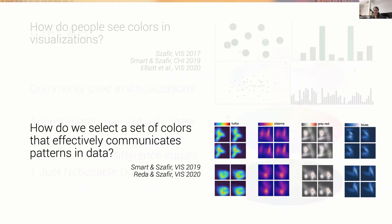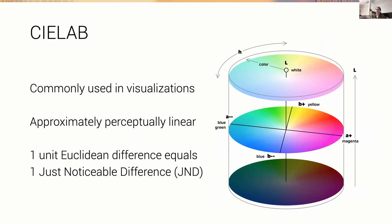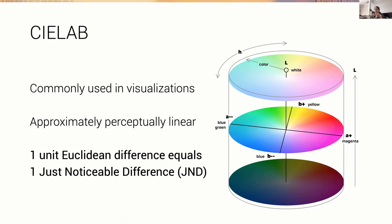All of this research will fundamentally build off the color space called CIE lab. Visualization has historically used CIE lab rather than RGB. Lab consists of three axes: lightness, the amount of blue and yellow, and the amount of red and green. It's approximately perceptually linear. That is, one unit of Euclidean distance approximately corresponds to one just noticeable difference or JND.